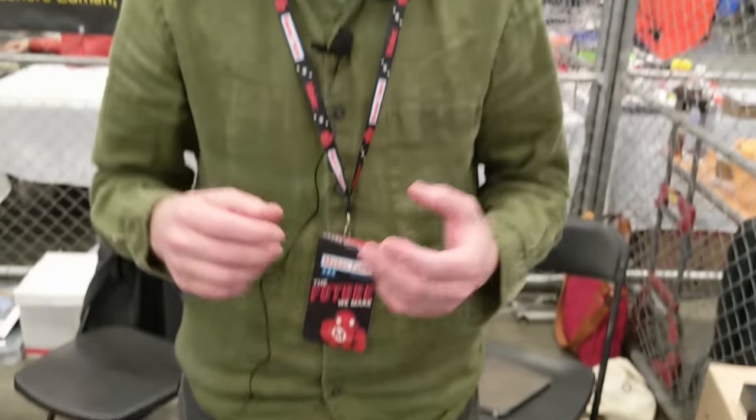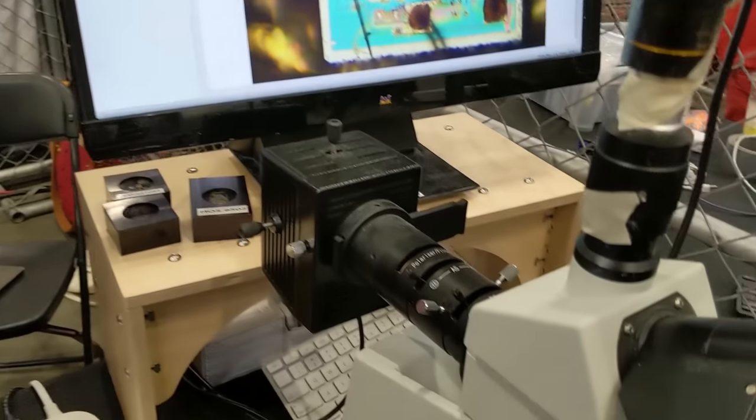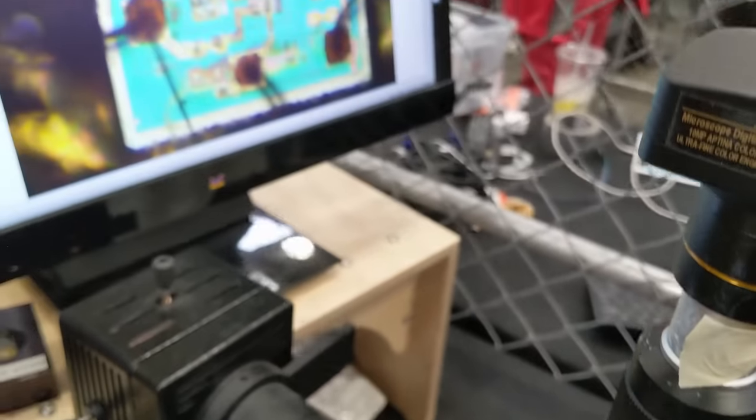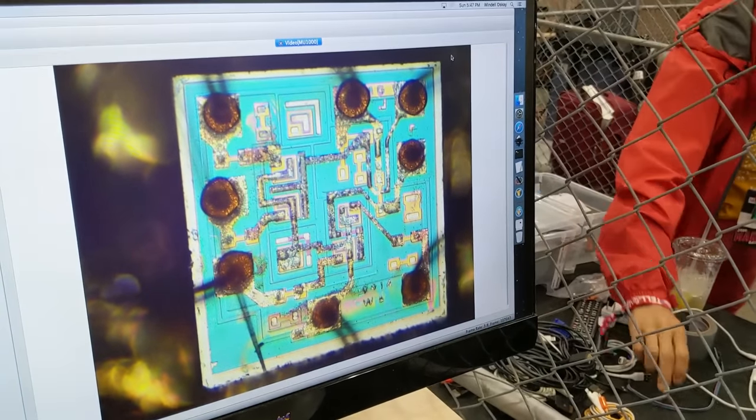Our collaborator John McMaster took one of these chips and, with great effort and skill, de-capped it, removed the epoxy from the top so that we can now look at it under the microscope. The actual piece of silicon inside is about one millimeter square. We have it under high magnification here.